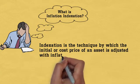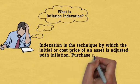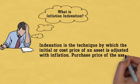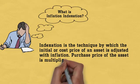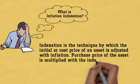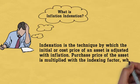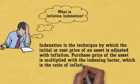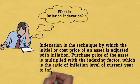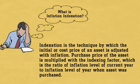The purchase price of the asset is multiplied with the indexing factor, which is the ratio of the inflation level of the current year to the inflation level of the year when the asset was purchased.